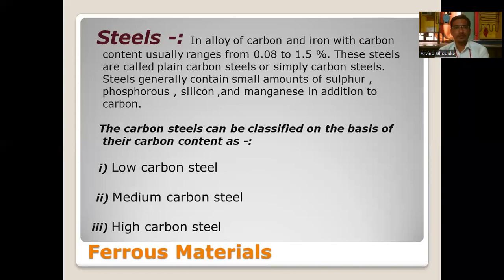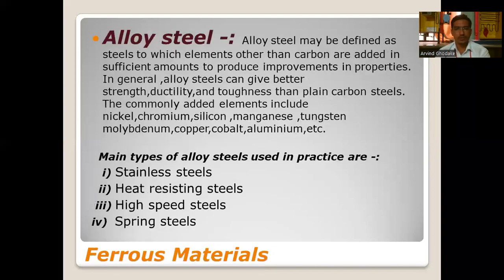Steel is an alloy of carbon and iron with carbon content usually ranging from 0.08% to 1.5%. These are called plain carbon steels or simply carbon steels. Steels generally contain small amounts of sulfur, phosphorus, silicon, and manganese in addition to carbon. Carbon steels can be classified based on carbon content as low carbon steel, medium carbon steel, and high carbon steel.